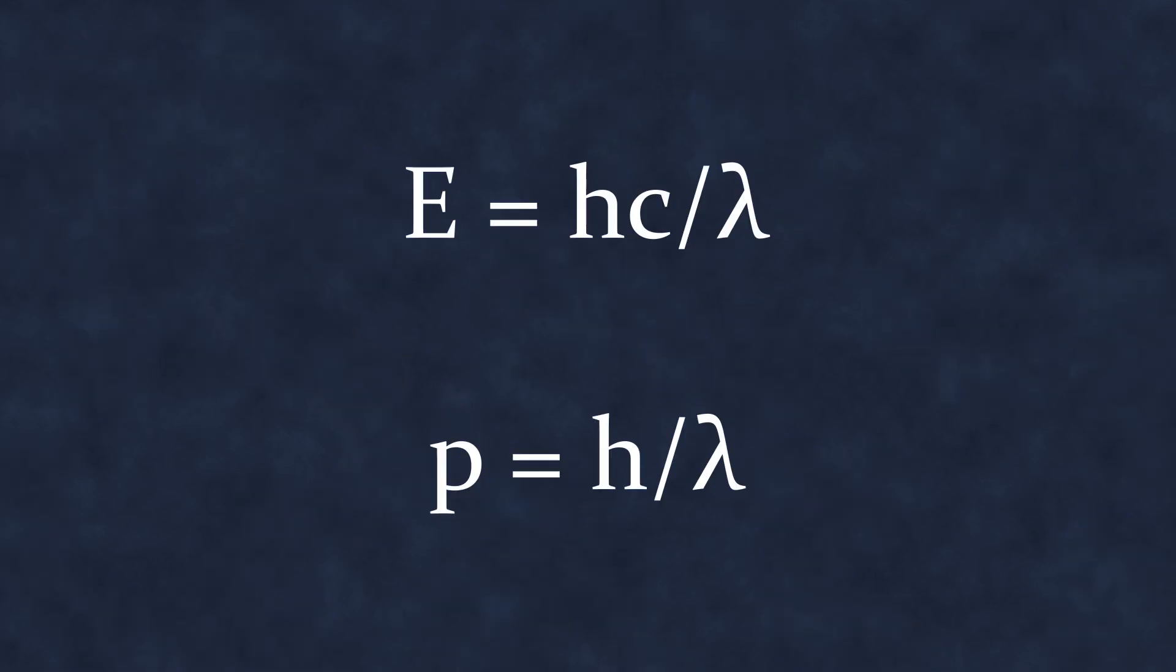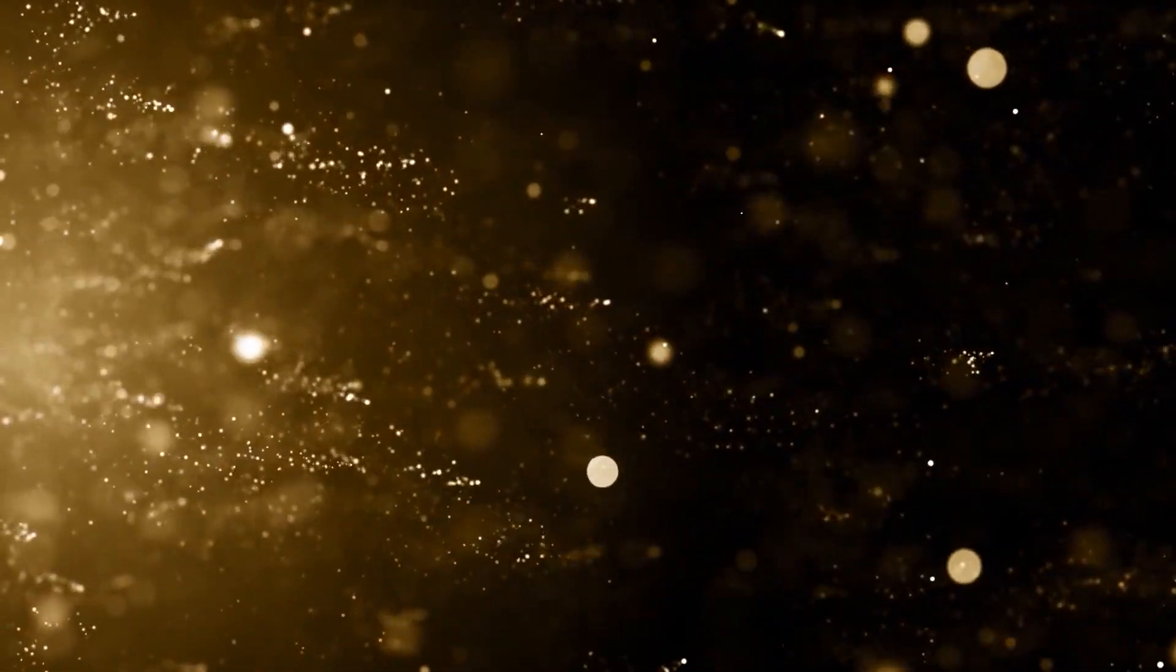For example, the energy and momentum of an ordinary real photon are related to the wavelength of the corresponding electromagnetic radiation, which we can measure in an experiment. For a virtual photon, the expression for momentum remains relevant, but the expression for energy does not work. The energy of a virtual photon is zero. This means that a stream of such photons has zero energy, so we cannot observe this stream by ordinary methods, which assume the exchange of this very energy with the detector.